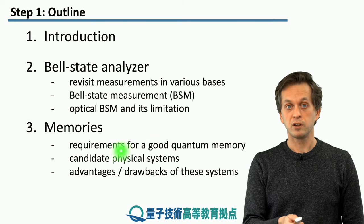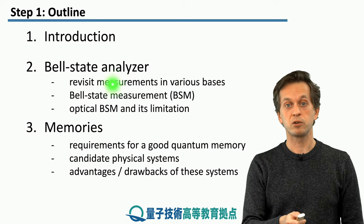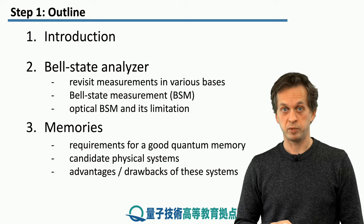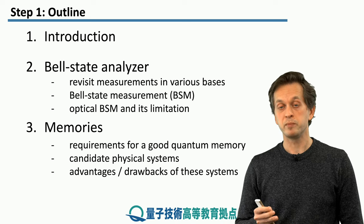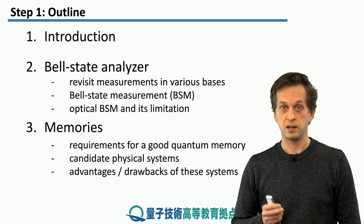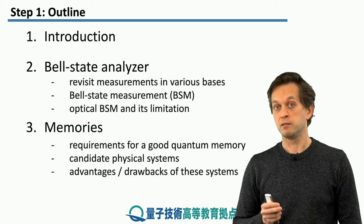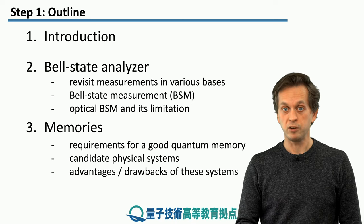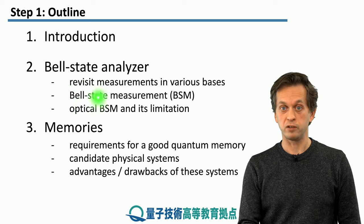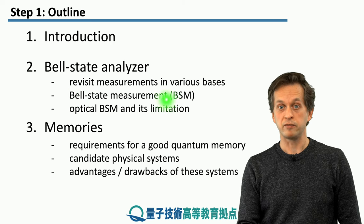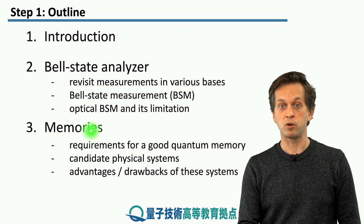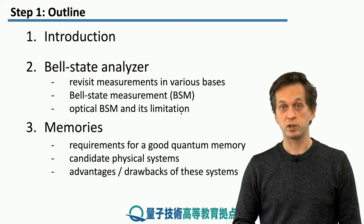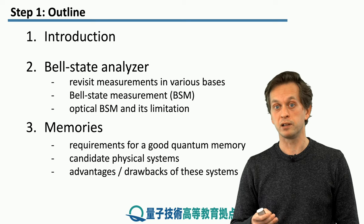After this introduction, we will spend the first half of this lesson talking about the bell state analyzer. We will revisit measurements and how they can actually be implemented — what does it mean to measure in different bases, and how can we implement different bases measurements with Pauli-Z measurements and some unitaries? Then we will move on to the quantum circuit for bell state measurement, and from that we will talk about implementation of bell state measurements with linear optics, considering how bell state measurements are done in real life.